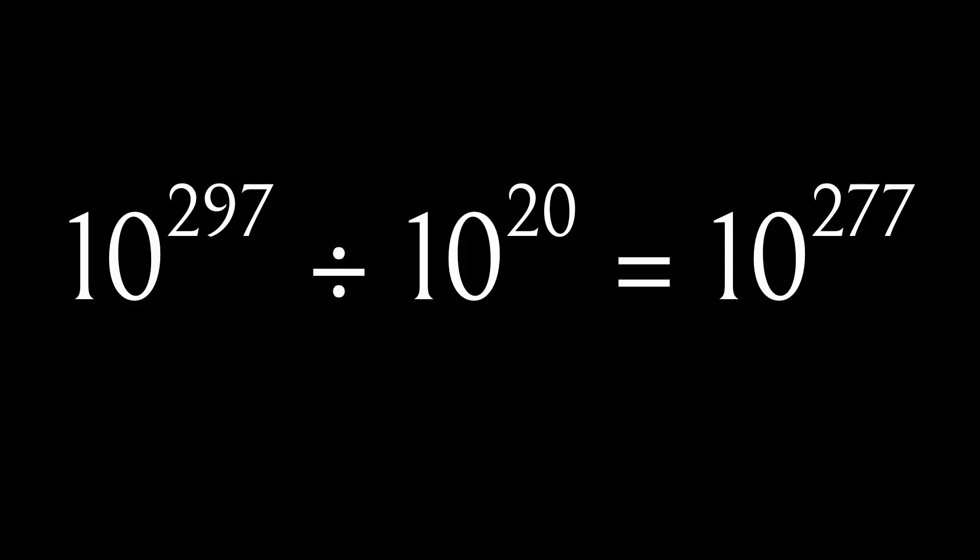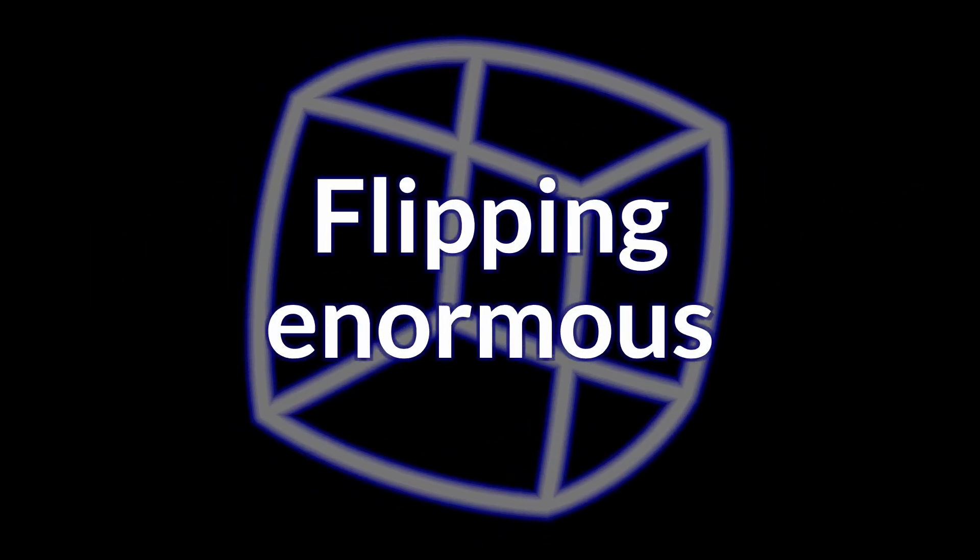Let's be optimistic — ridiculously optimistic. Let's say we had a computer the size of my laptop that could simulate a universe of 10 to the power of 20 edges. I find it difficult to imagine that humans could ever build such a powerful computer, but let's be ridiculously optimistic here. This impossibly powerful computer could simulate a universe with 10 to the power of 277 times fewer edges than it contains itself. Flipping this calculation, you can see that if there's a computer that runs our universe, it likely contains 10 to the power of 277 times more edges than the universe it is simulating.